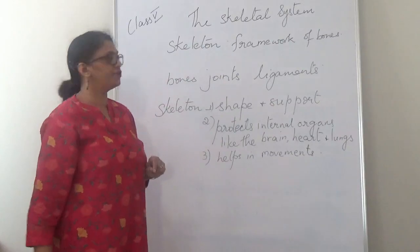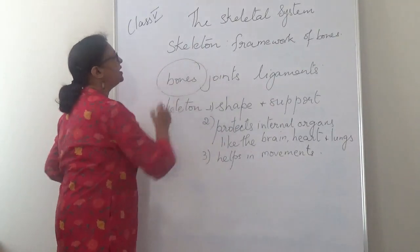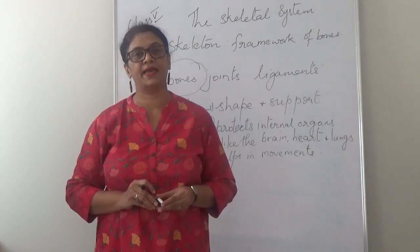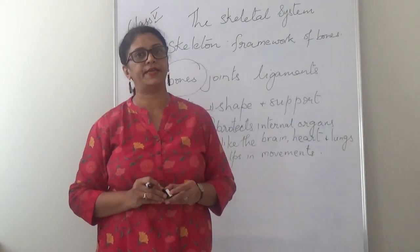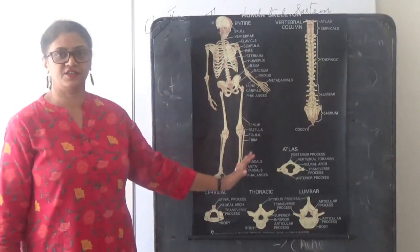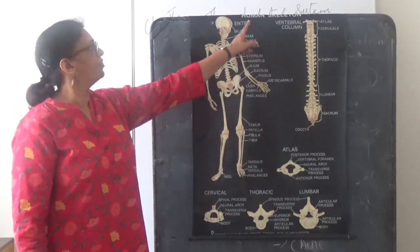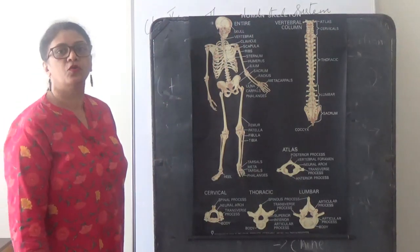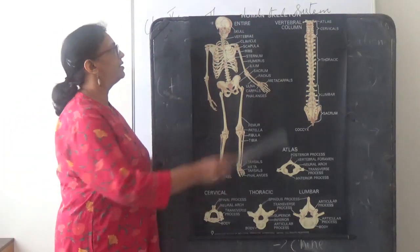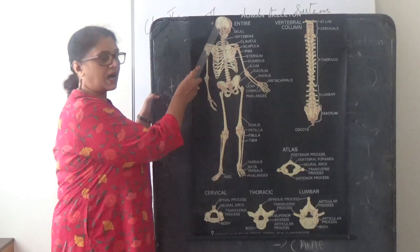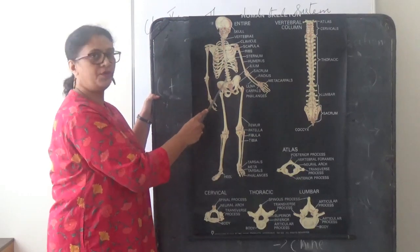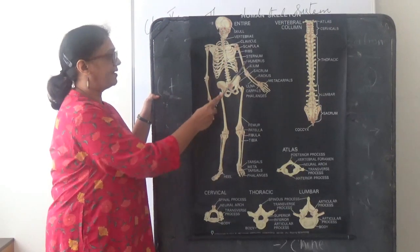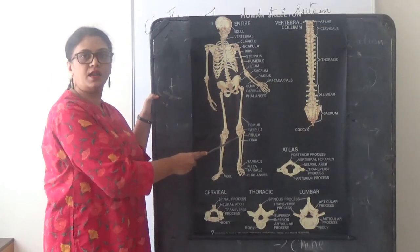In today's video we are going to study the major bones in our body. Here I have a chart on the human skeleton. The major bones in our body are the skull, the backbone, the ribs, and the limbs.